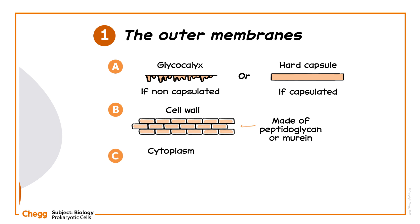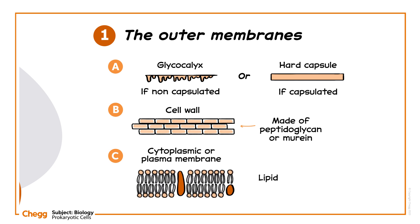Next, there's the cytoplasmic membrane, made up of lipids and proteins. Its fundamental building block is the phospholipid. The phospholipids in the membrane arrange themselves into a phospholipid bilayer.